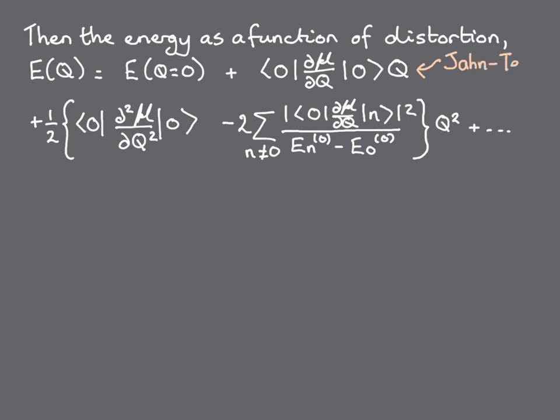You might have come across this first-order term previously in the context of the Jahn-Teller theorem. It's energy-lowering for orbitally degenerate states and centrosymmetric distortions, and so it's not relevant for our discussion of ferroelectricity, where, of course, q has to be a non-centrosymmetric polar distortion.